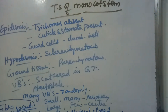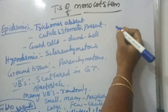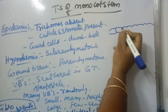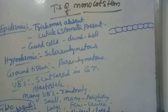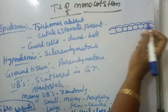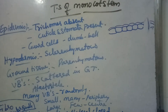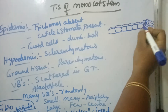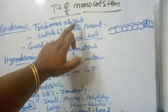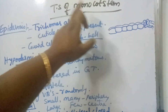In monocot stem, the outermost layer is epidermis, just like in dicot stem — rectangular shaped cells arranged compactly without intercellular spaces. However, trichomes are absent. Thin cuticle is present, and stomata are also present. But the guard cells are dumbbell shaped in monocot stem, unlike the kidney shaped guard cells of dicot stem.